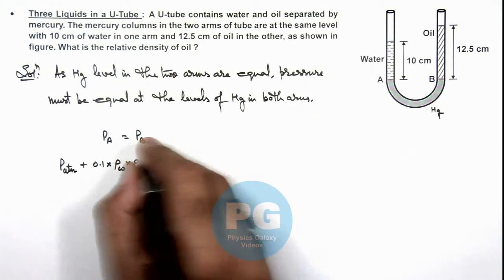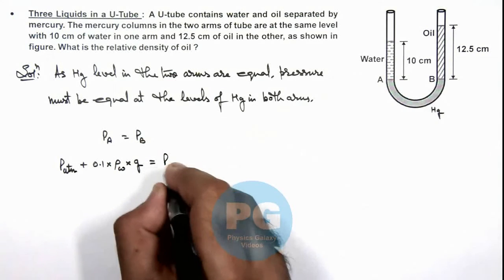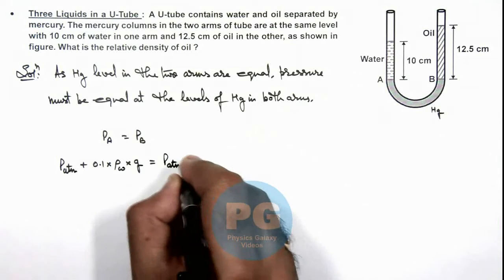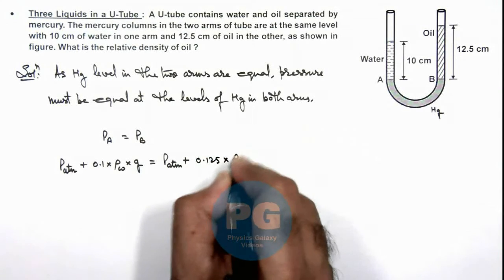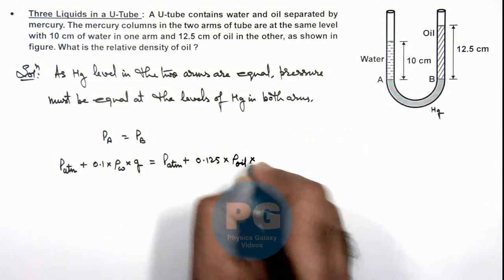This must be equal to pressure at B will be P_atmospheric plus the length is 0.125 multiplied by ρ_oil multiplied by g.